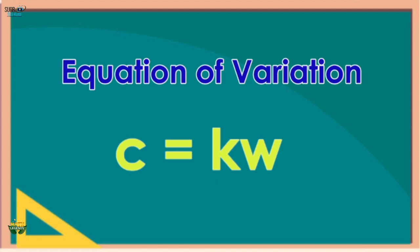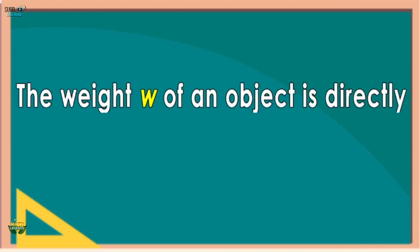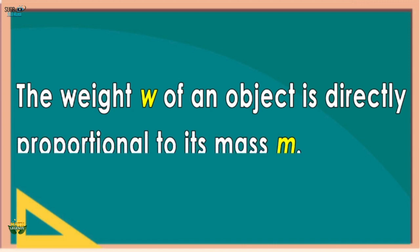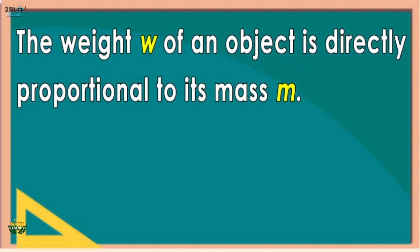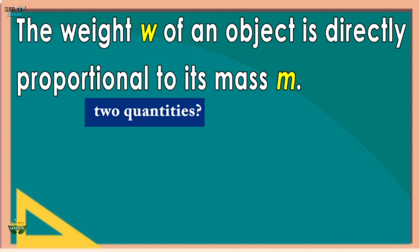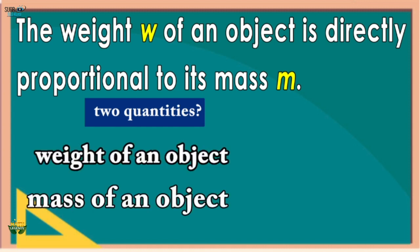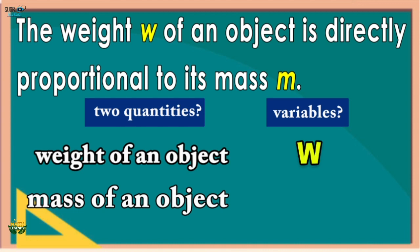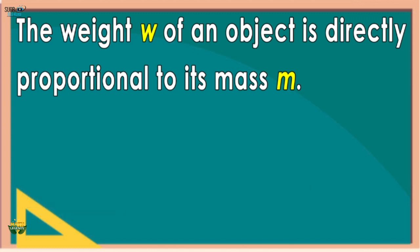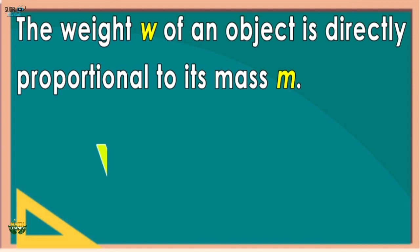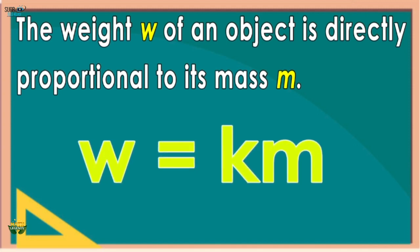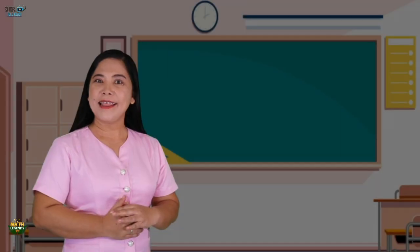Example number two: The weight W of an object is directly proportional to its mass m. The two quantities are weight of an object and mass of an object. W represents weight and m represents mass. The equation of variation is W = km, where k is the constant of variation.